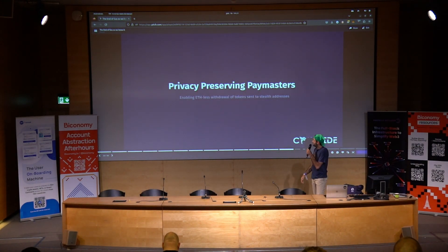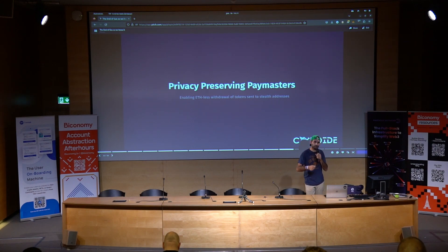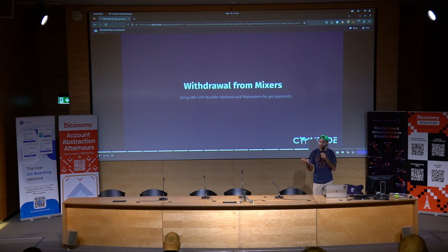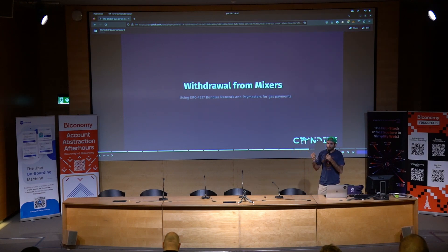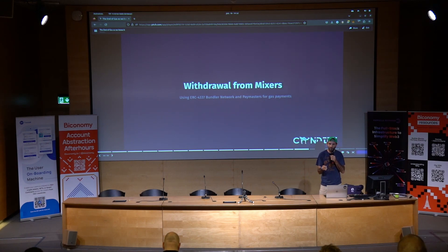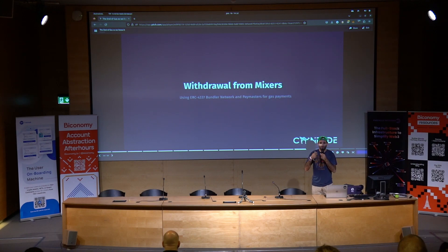Another type is privacy-preserving Paymasters. The idea is that if you enable a Paymaster to sponsor gas for accounts, you can create private accounts. You may have seen how Tornado Cash works — if you deposit and then withdraw on a new address, you need a relayer because you don't have ETH in that address. If those relayers are sanctioned, you can use Paymasters to sponsor the gas and use the same ERC-4337 network to act as a censorship-resistant relayer for private transactions.